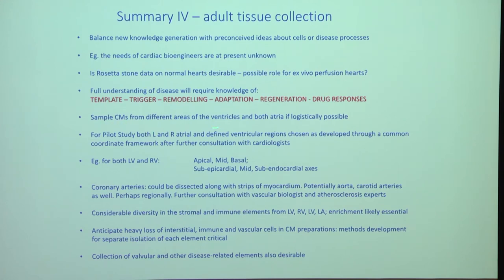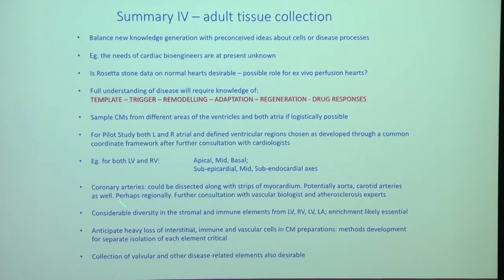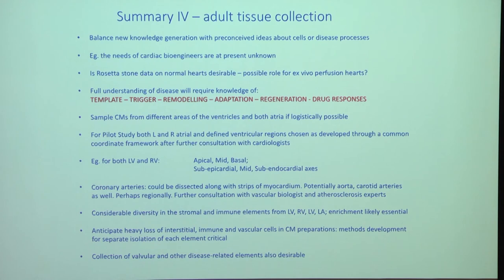Coronary arteries are obviously very important — the main arteries can be dissected along with strips of myocardium; the aorta and carotid arteries may also need to be harvested to understand the atherosclerotic drive in individual donors. A key heart-specific issue is anticipated heavy losses of interstitial immune and vascular cells during cardiac preparations. Valvular tissue is also important to include.